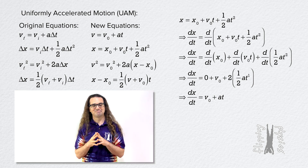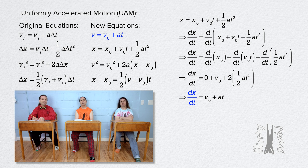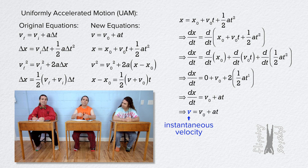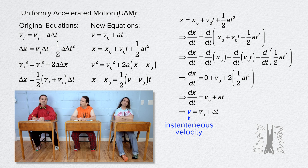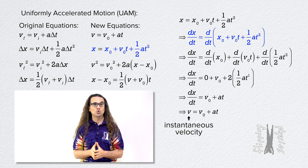Very nice. What are we waiting for — are we missing something? That is the first UAM equation. The derivative of position with respect to time is velocity, so we just derived the equation velocity equals velocity naught plus acceleration times time. That equation tells us the instantaneous velocity of an object equals the velocity of the object at time zero plus the acceleration of the object times the time at which the instantaneous velocity occurs. That is an equation for instantaneous velocity. Taking the derivative of the second uniformly accelerated motion equation with respect to time gives us the first UAM equation.